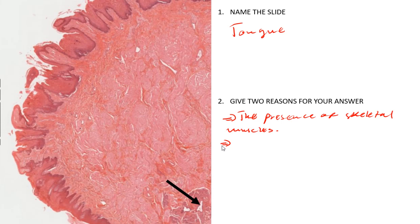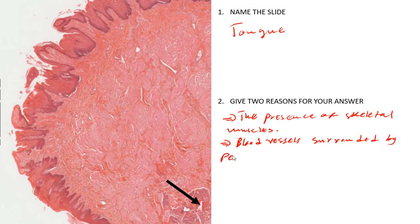The other reason is the presence of numerous blood vessels. You can see blood vessels here — blood vessels surrounded by pericytes. Pericytes are cells that give support to the blood vessels. These blood vessels are found in the lamina propria.